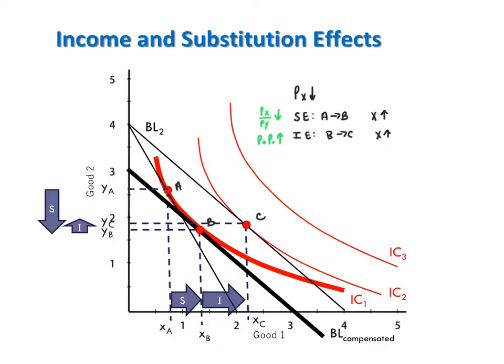So far we've only focused on what happens to good x when the price of good x changes, but now let's look at what happens to good y. The substitution effect from A to B shows the consumer buying more of good x as well as more of good y. The income effect from B to C shows the consumer buying more of good x as well as more of good y.